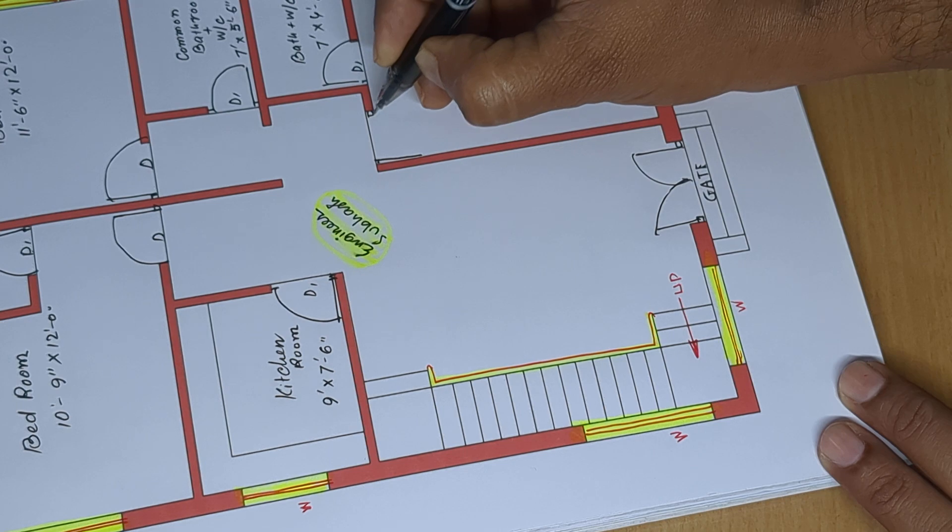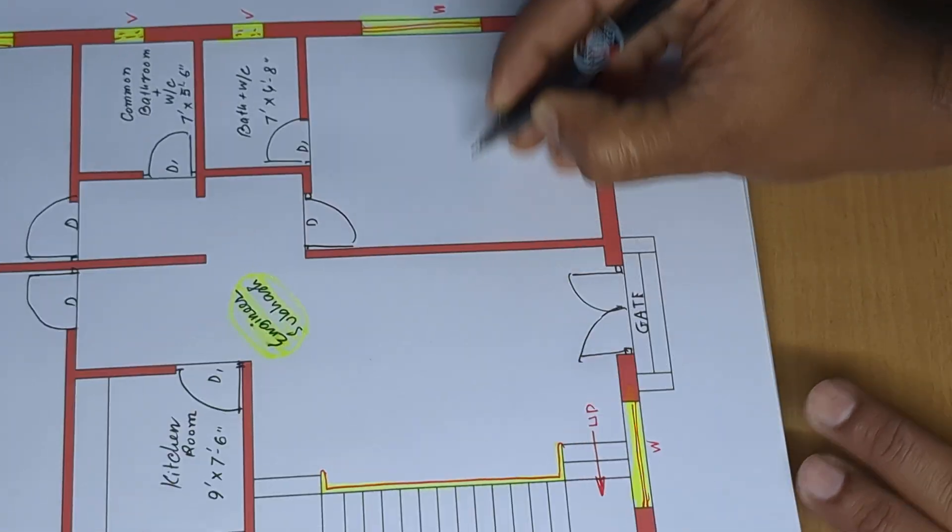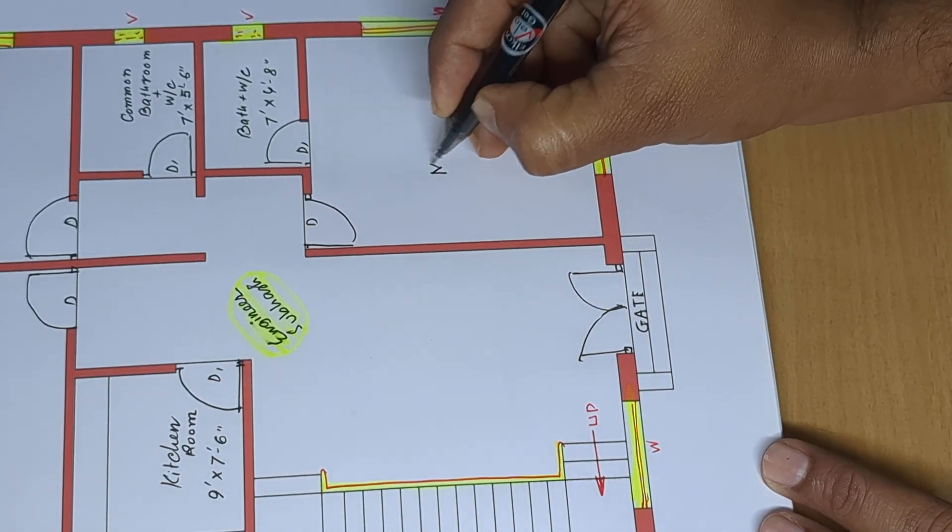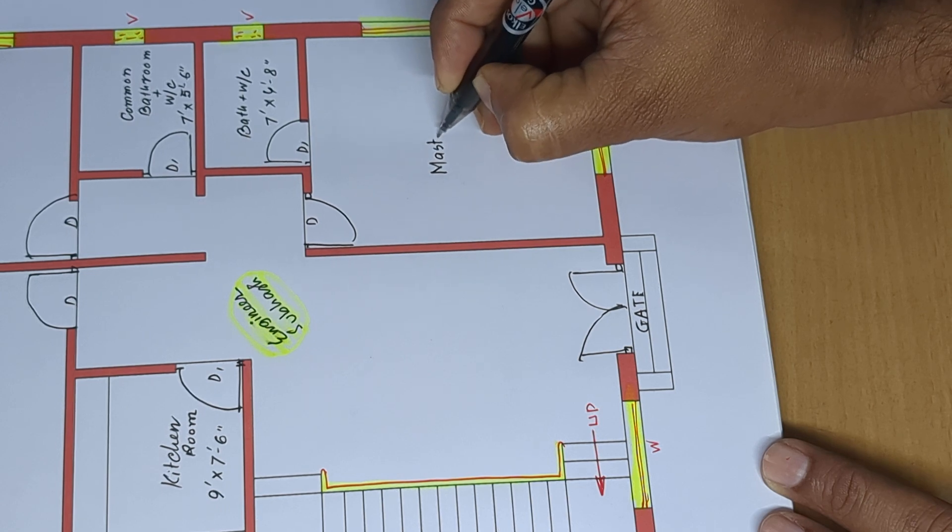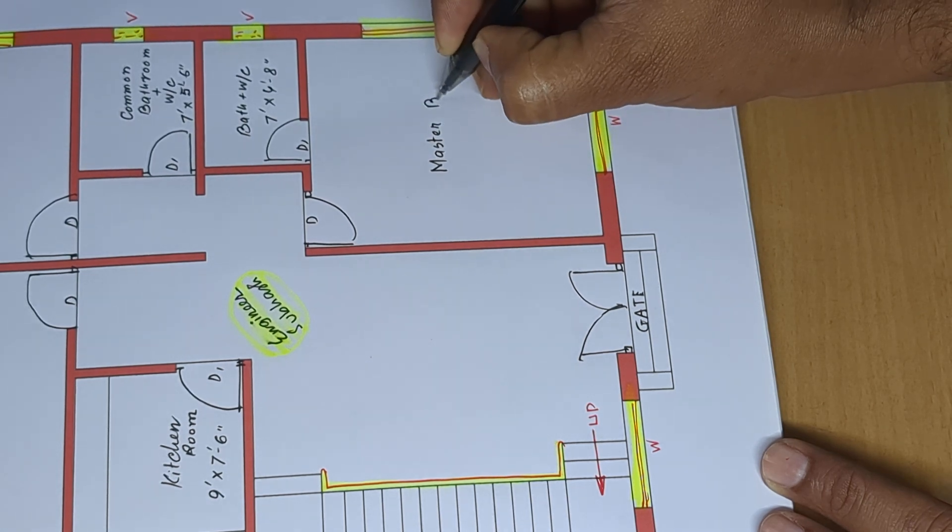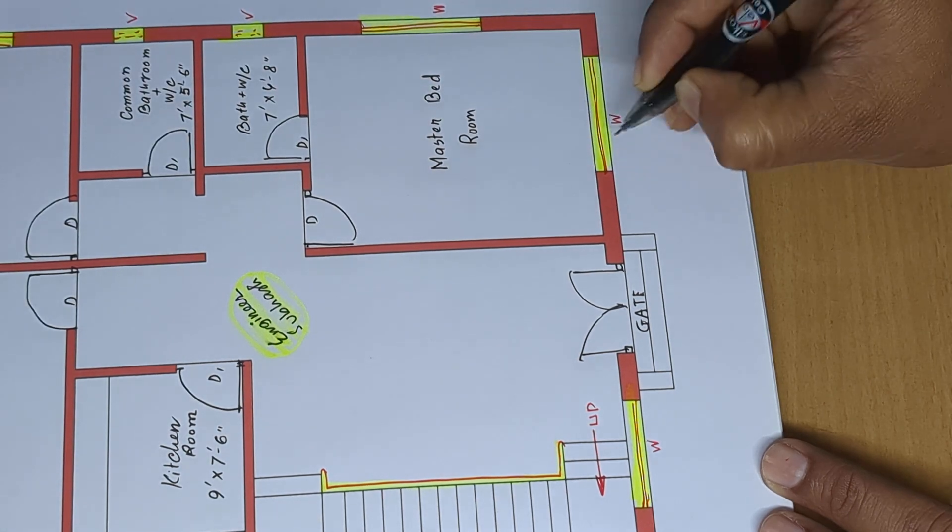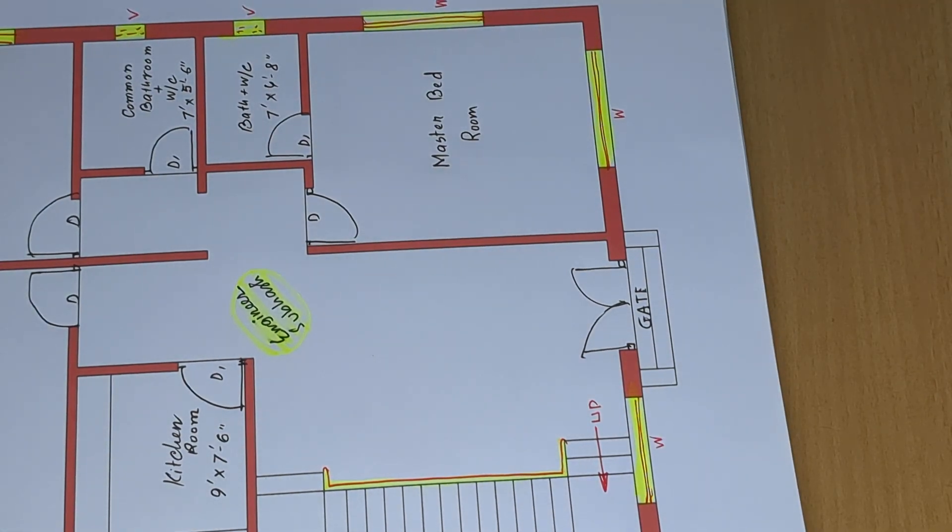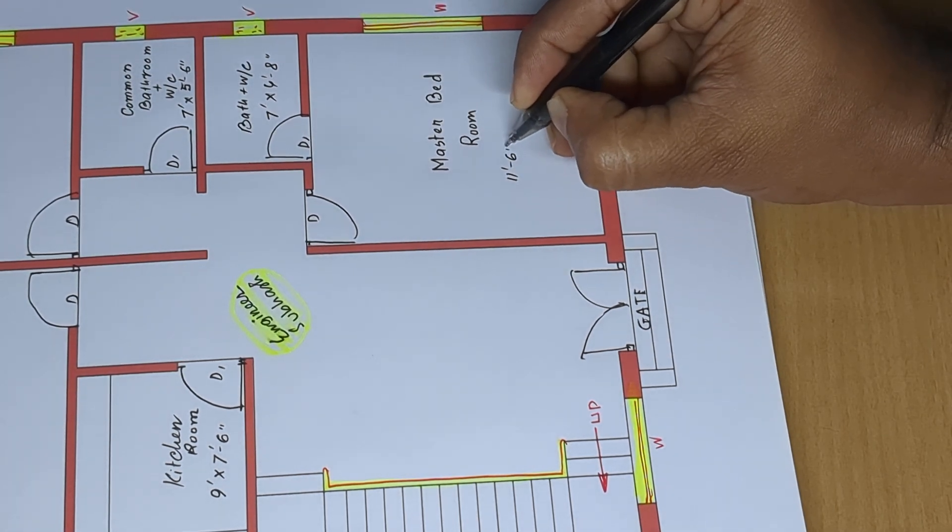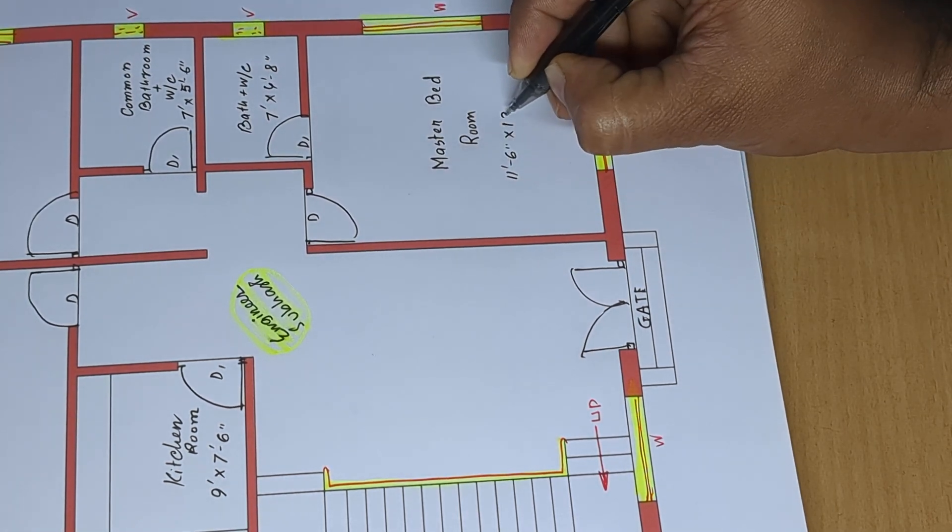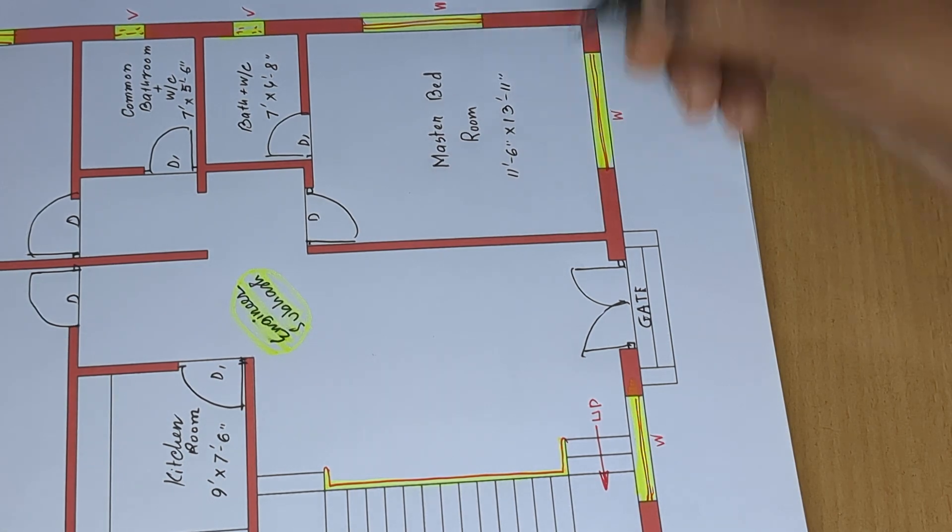Third bedroom, door, master bedroom with two windows, 11 feet 6 inches by 13 feet 11 inches.